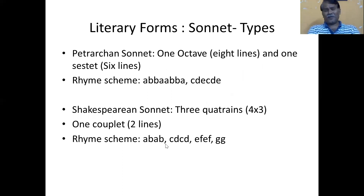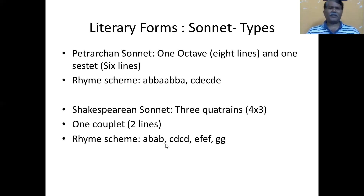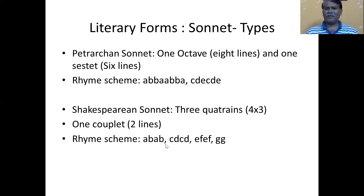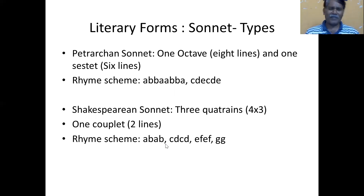There are two types of sonnets: the Petrarchan sonnet and the Shakespearean sonnet. However, 14 lines is fixed in both sonnet forms, but the stanza forms are different. In the Petrarchan sonnet, there is an eight-line stanza — that is the octave — and one sestet, that is six lines. Normally the rhyme scheme in the Petrarchan form is A-B-B-A-A-B-B-A-C-D-E-C-D-E.